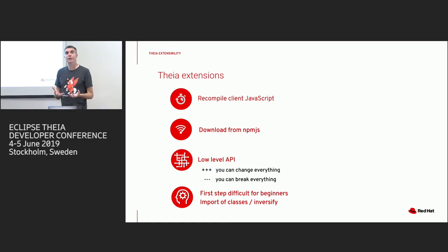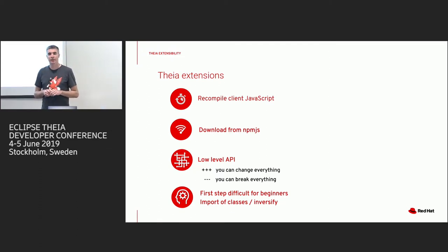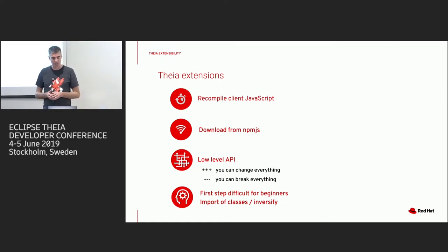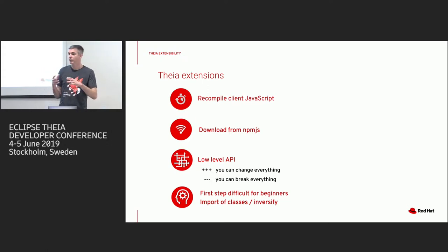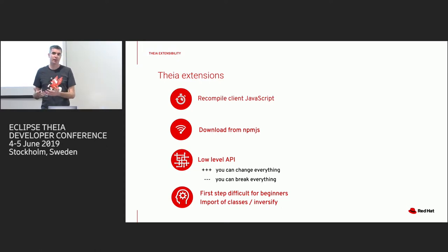We looked at the TI extension model. We still had to recompile the full IDE when adding a new extension, and we were downloading extensions from npm.js, so network issues could be a problem. It's also a low-level API — with the extension model you can override everything, which is very simple, but you can also break everything. So we wanted to avoid that.